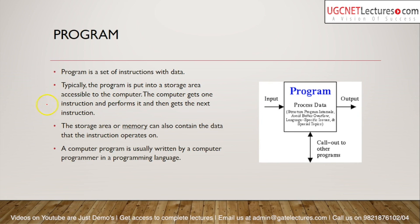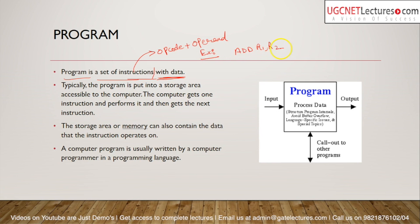Now let's look at programs and the difference between software and program. A program is a set of instructions with data — not just instructions alone. An instruction is made up of an opcode plus operands. For example, in an instruction we have one opcode and two operands. So a program is a set of instructions with data.